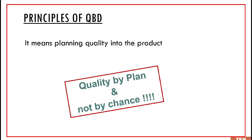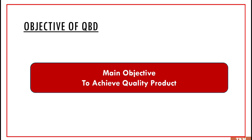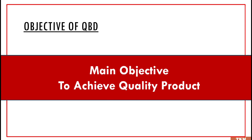In the previous video, we saw the principles of QBD, in which QBD means planning quality into the product. That's why we say quality by plan and not by chance. QBD facilitates improvement in quality by thoughtful planning and meaningful execution. The main objective of QBD is to achieve a quality product.